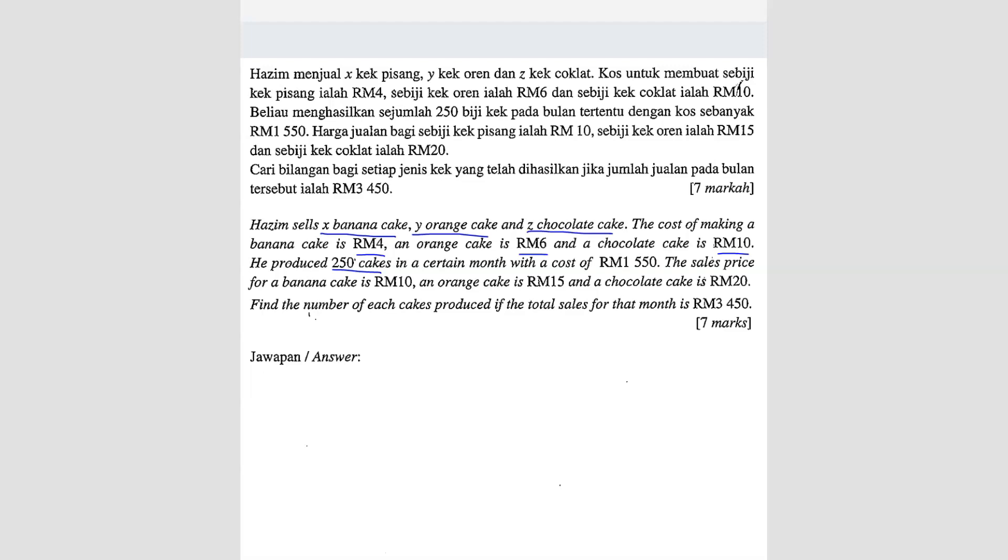He produced 250 cakes in a certain month with a cost of 1550. The total sales price for banana cake is 10, orange cake is 15, and chocolate cake is 20. Find the number of each cake produced if the total sales for that month is 3450.